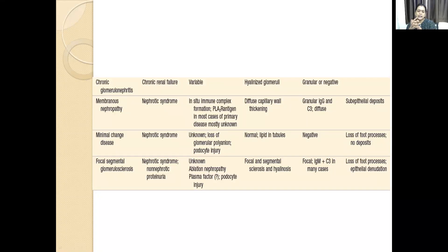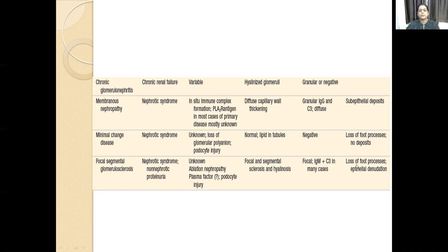FSGS — there can be epithelial damage as a result of some unknown thing. There is something called renal ablation type of FSGS, which is usually secondary to unilateral renal agenesis or reflux nephropathy. In light microscopy, we see focal segmental sclerosis, hyalinosis, and IgM and C3 will get deposited. There are loss of foot processes and epithelial denudation — all contributing to proteinuria in nephrotic syndrome.